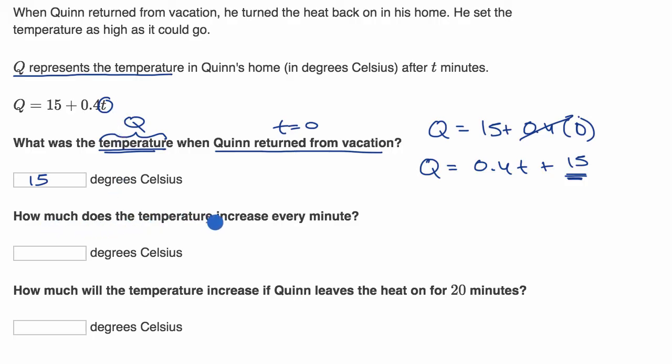How much does the temperature increase every minute? There's a couple of ways you could think about this. One, if you recognize this as slope intercept form, you could see that 0.4 is the slope. So that says for every one minute change in time, you're going to have an increase in temperature by 0.4 degrees Celsius.